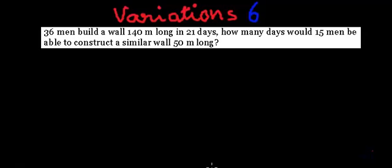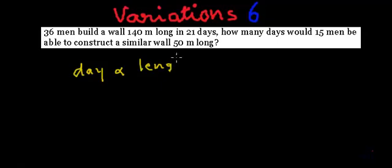So we can write it this way: days are proportional to the length of the wall and inversely proportional to the number of men. This particular problem actually has the combination of both direct and indirect variation.